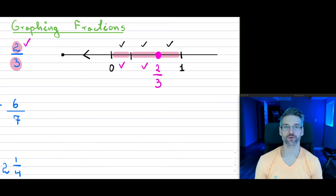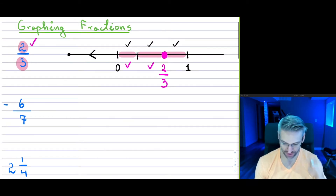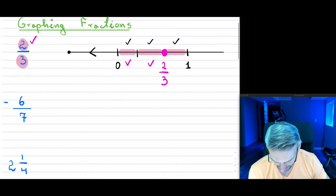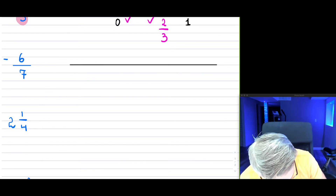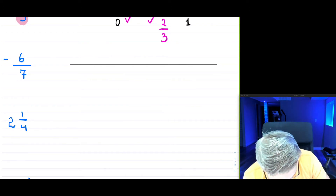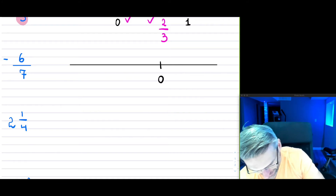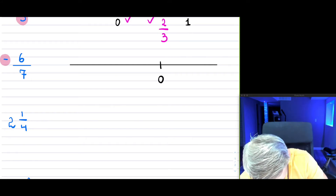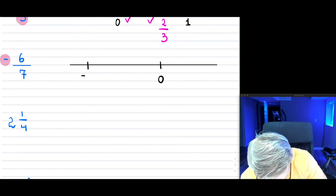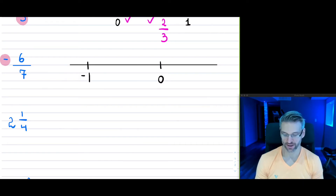So on the graph, your 2 over 3 would be right there — that's how we graph it. Now let's look at the second example: negative 6 over 7. With this negative fraction, I'm going to graph the same line but place zero a little to the right, because the negative means we'll be going in the left direction.